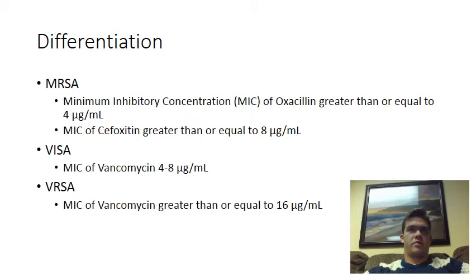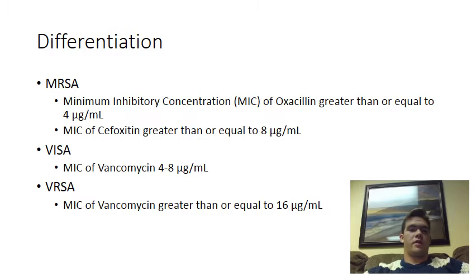Clinically, the way that these three strains would typically be differentiated is that a doctor would be presented with what appears to be a normal staph infection and prescribe one of the basic antibiotics, like amoxicillin or erythromycin. If he gets no response from that antibiotic, he would suspect MRSA and probably prescribe vancomycin. If he again gets no response from the vancomycin, then he'd probably assume he's dealing with VRSA or VISA.